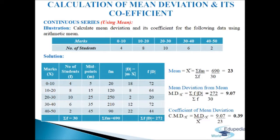Computing d = m − 23 (ignoring signs): 5−23=18, 15−23=8, 25−23=2, 35−23=12, 45−23=22. Last column f·d: 4×18=72, 8×8=64, 10×2=20, 6×12=72, 2×22=44, giving sigma f·d = 272.